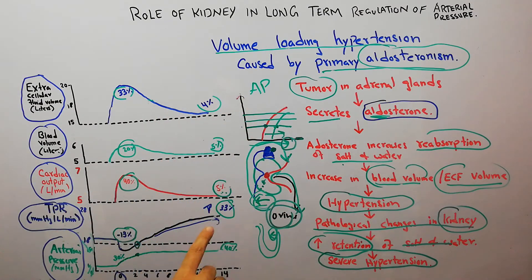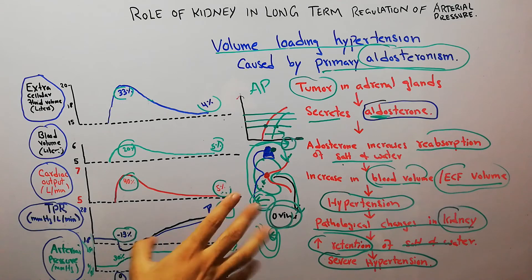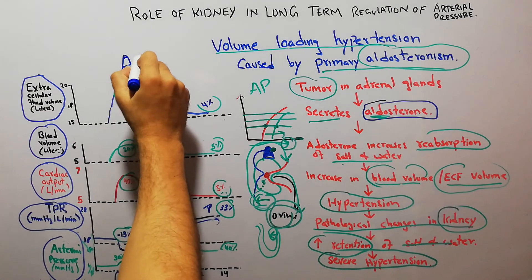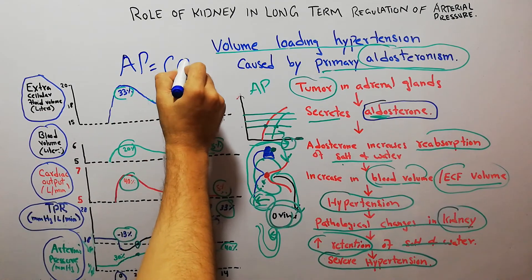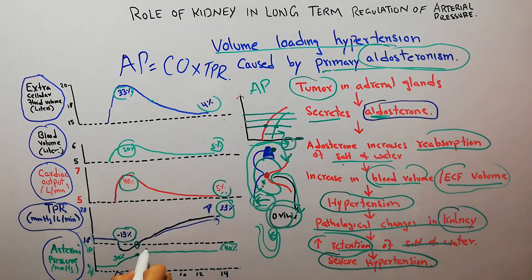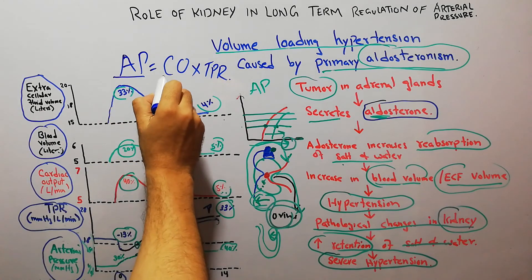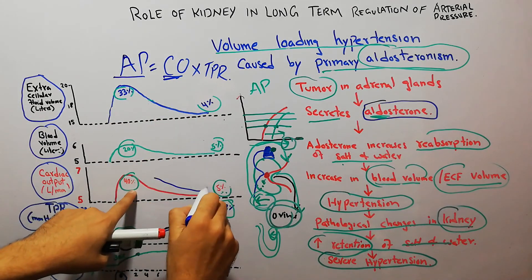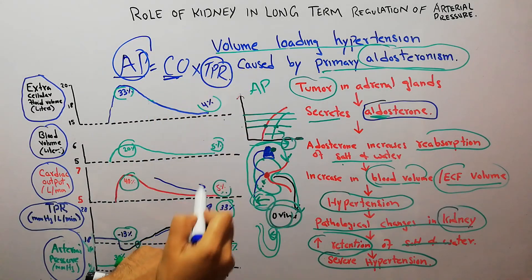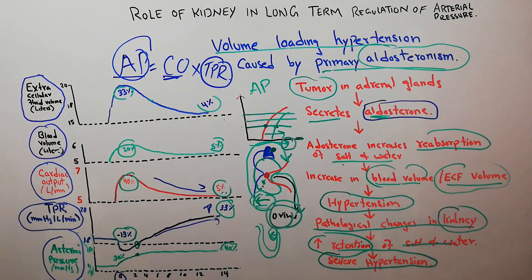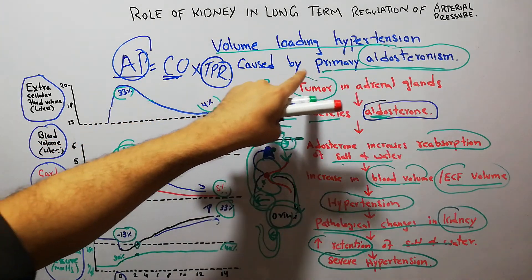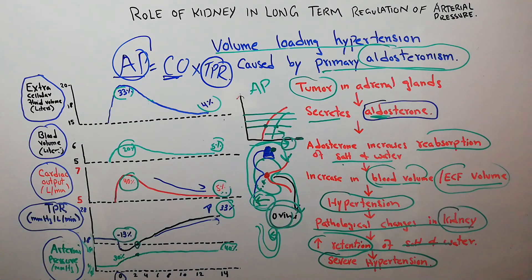Since arterial pressure equals cardiac output multiplied by total peripheral resistance, once cardiac output returns to normal, the elevated arterial pressure is maintained by increased total peripheral resistance. That concludes the sequence of volume loading hypertension in primary aldosteronism.